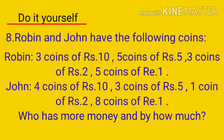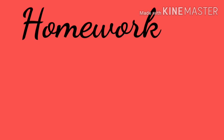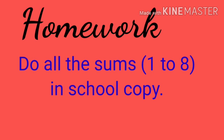So there are 2 boys, Robin and John, and they are having certain coins. You have to find out who has more money and by how much. Now students, this is your homework time. Do all the sums 1 to 8 in your school copy, very neatly, and don't forget to give margins. Thank you children for watching.